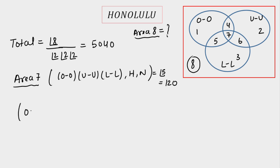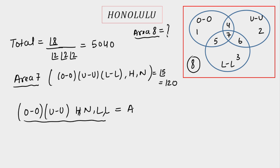Next, let's calculate the region where OO and UU are together, and L and L are free — along with H and N. This corresponds to areas 4 + 5 + 7 combined. Counting OO and UU each as one unit, we have 6 letters total, with L repeating, giving 6! divided by 2! = 360.